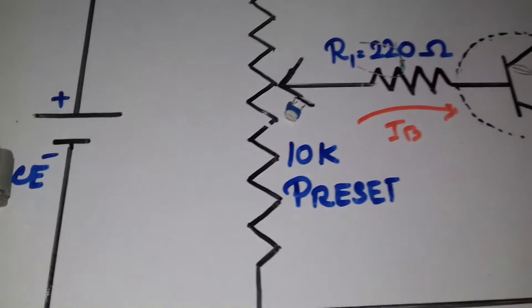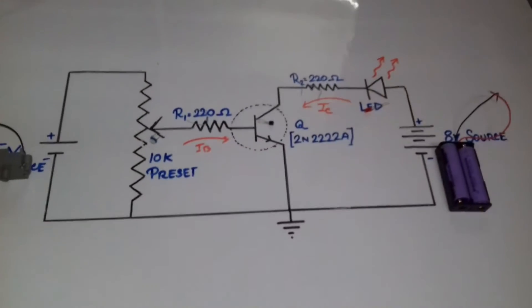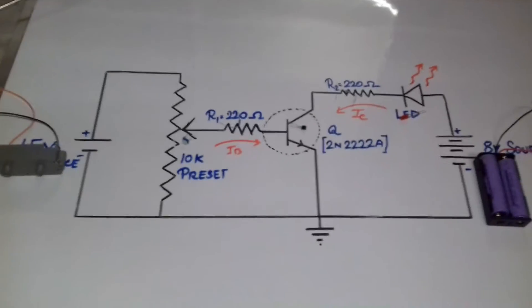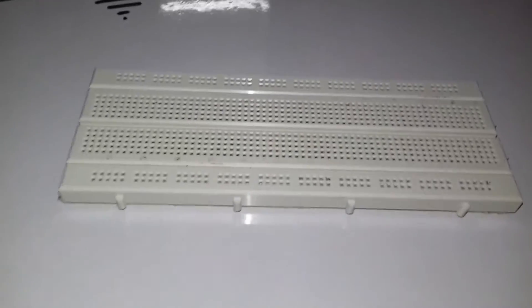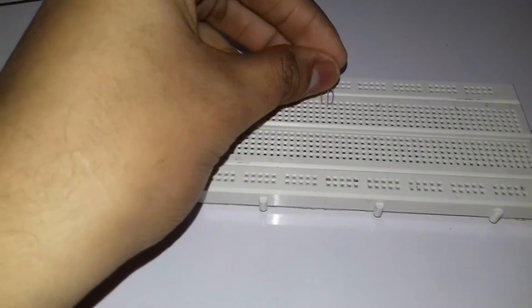That is why I am using this preset resistor. So, let's go to make the circuit. I will make the circuit on this breadboard. So, this is the transistor.